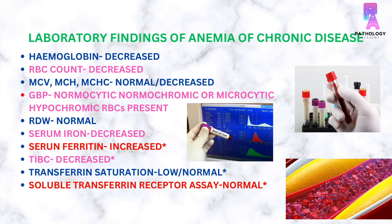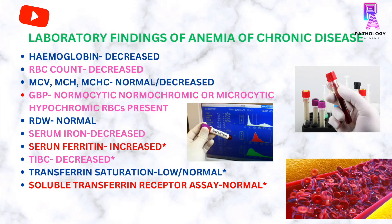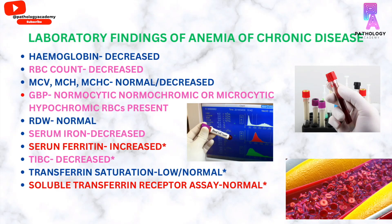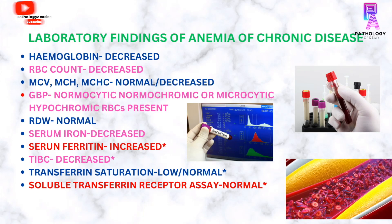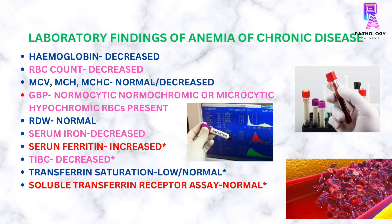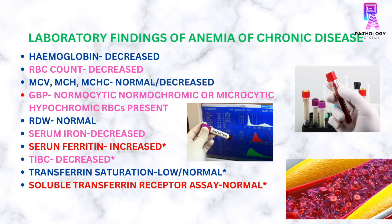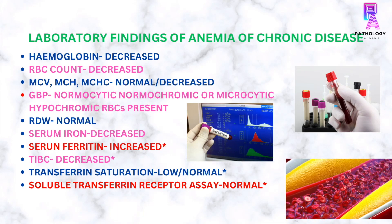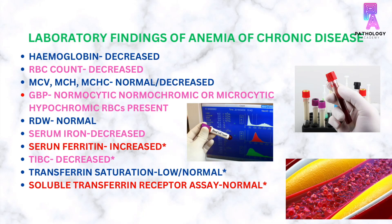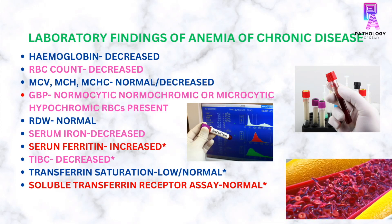The serum iron level is low. Serum transferrin level is low. Serum ferritin is high because ferritin is an acute phase reactant and it increases in inflammatory conditions. The total iron binding capacity can be normal or low because serum iron and transferrin are low. The transferrin saturation is low and serum transferrin receptor assay value is normal.